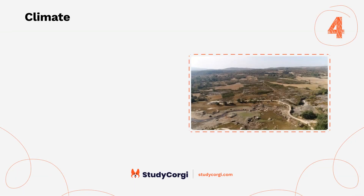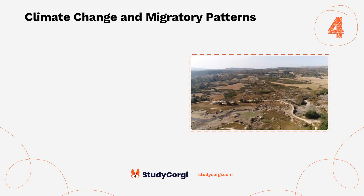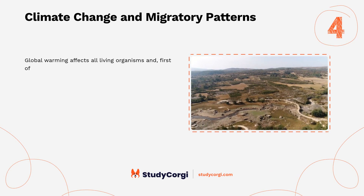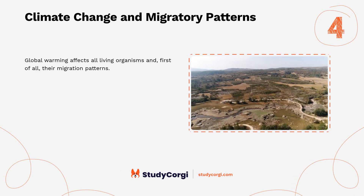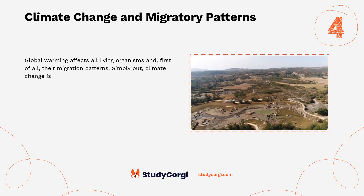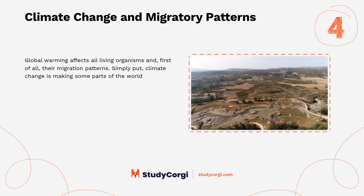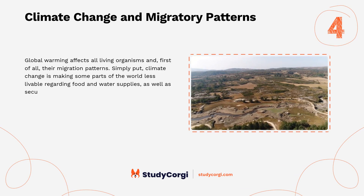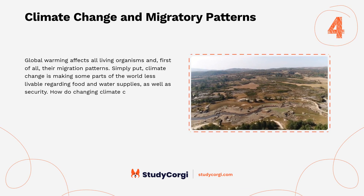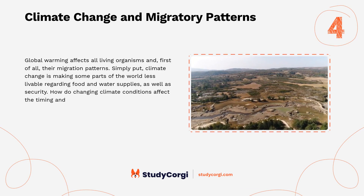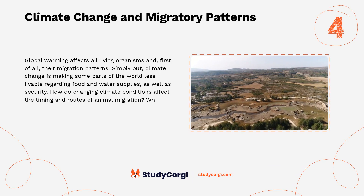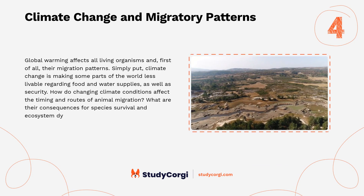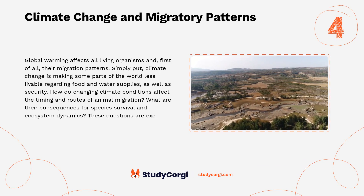Climate Change and Migratory Patterns. Global warming affects all living organisms and, first of all, their migration patterns. Simply put, climate change is making some parts of the world less livable regarding food and water supplies, as well as security. How do changes in climate conditions affect the timing and routes of animal migration? What are their consequences for species survival and ecosystem dynamics? These questions are exciting to focus on.